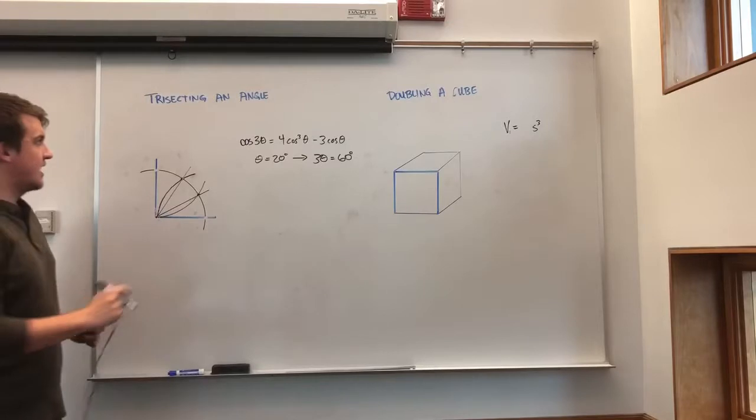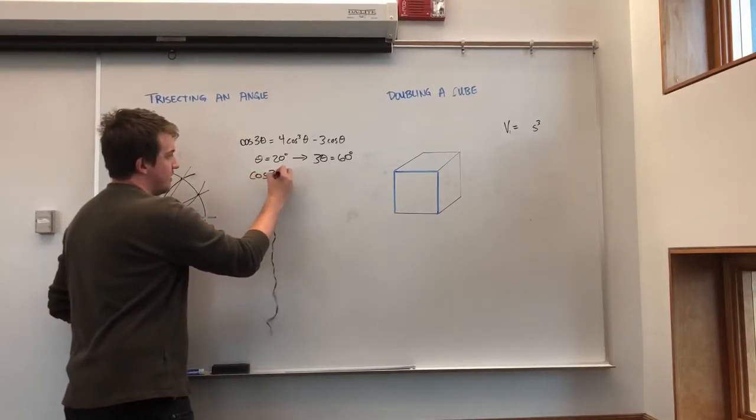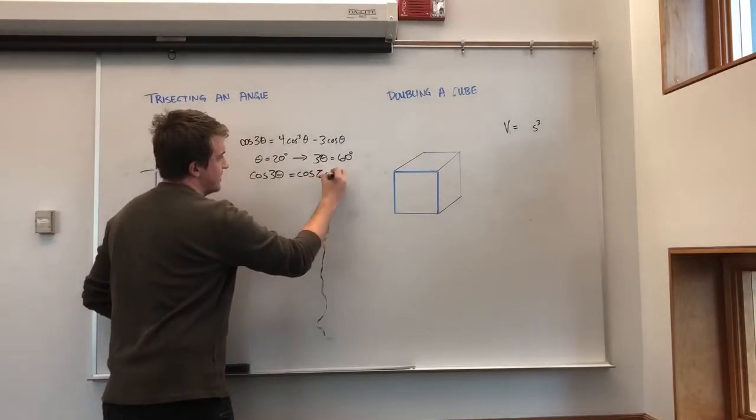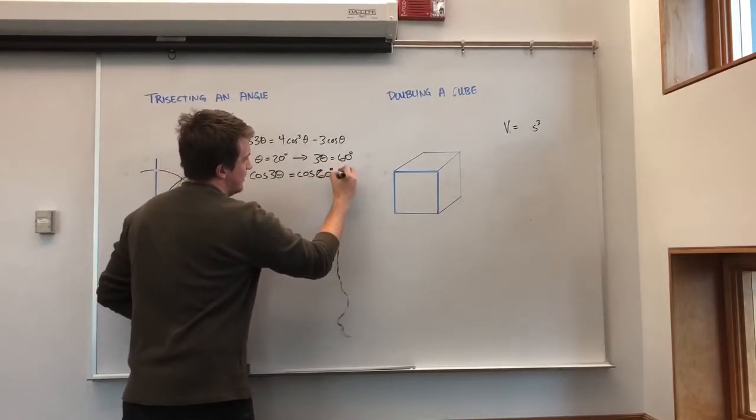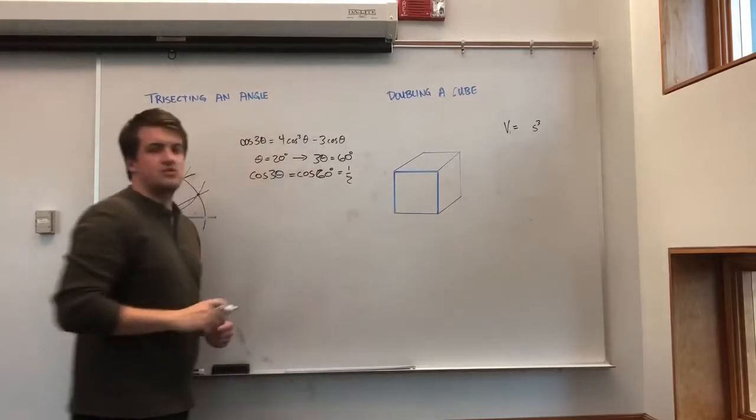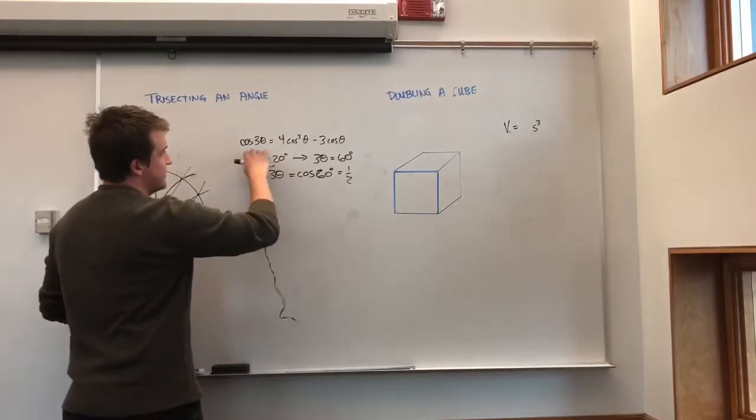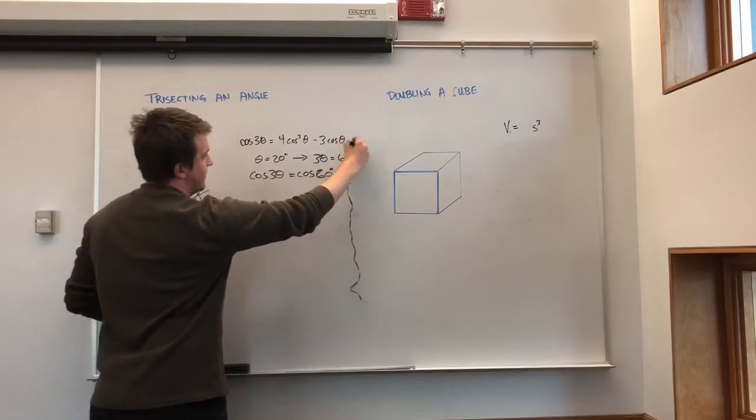So, if we look at cosine of 3 theta, that would just be saying cosine of 60 degrees, which we know is equal to 1 half. So, if we take this identity and rewrite it,